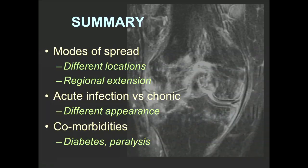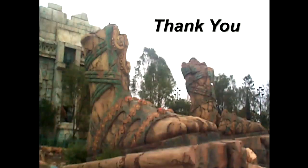To summarize: remember the modes of spread that affect different locations of the body and look for regional extension. Consider the appearance of acute infection versus chronic infection, which have different appearances, and consider comorbidities such as diabetes and paralysis. Thank you very much for your time.